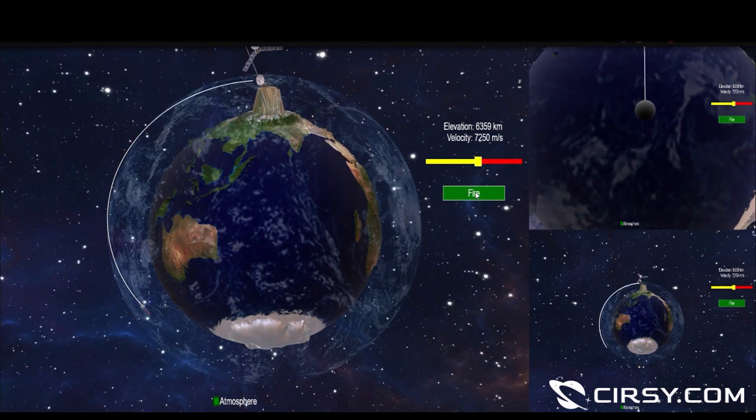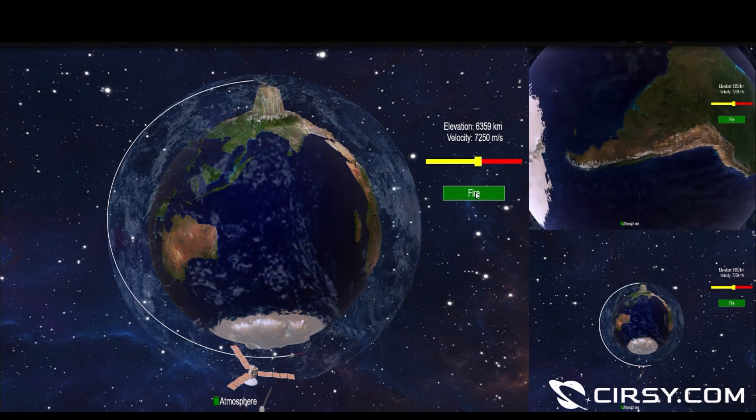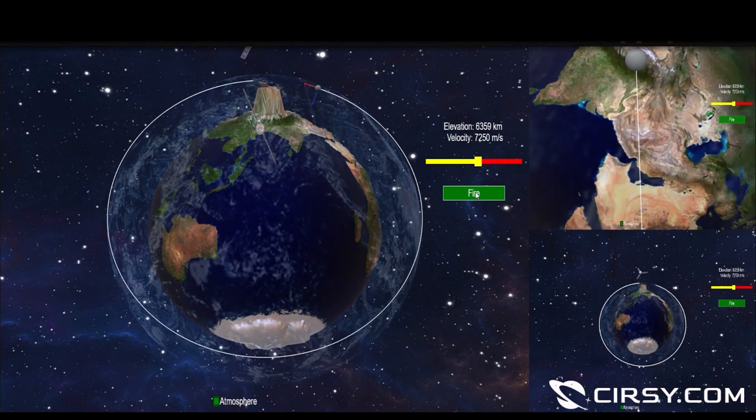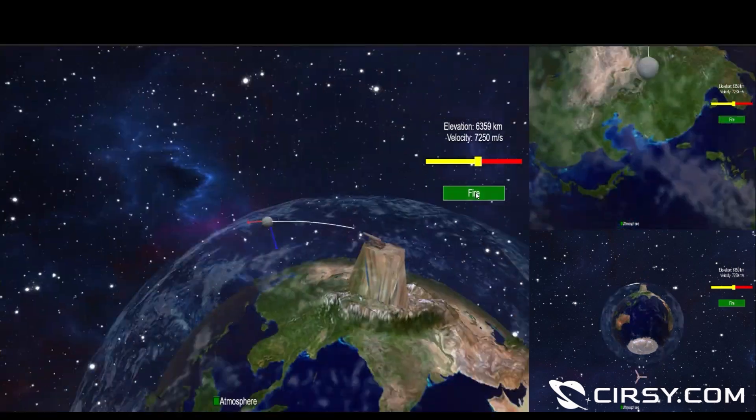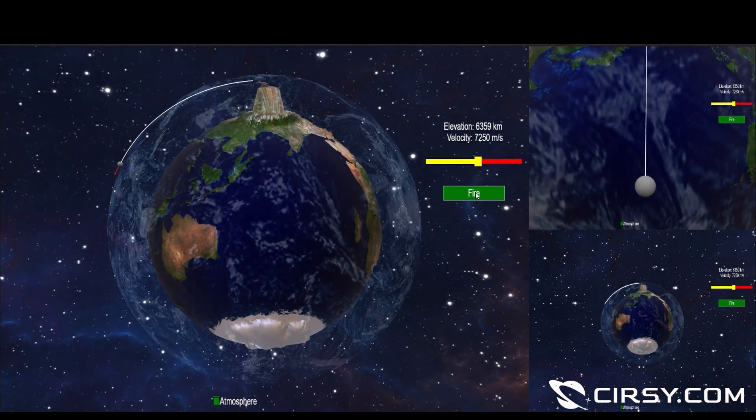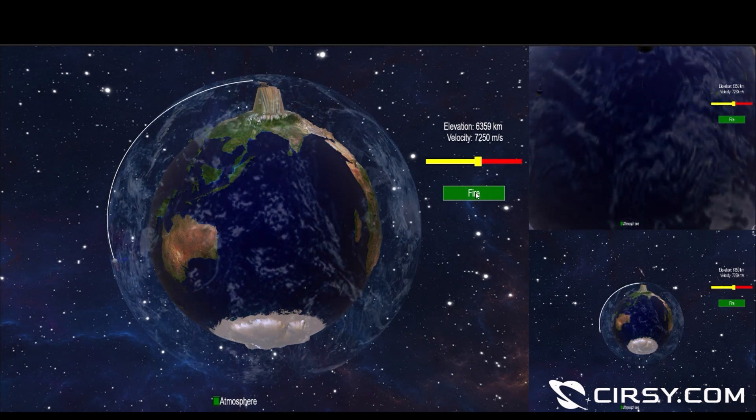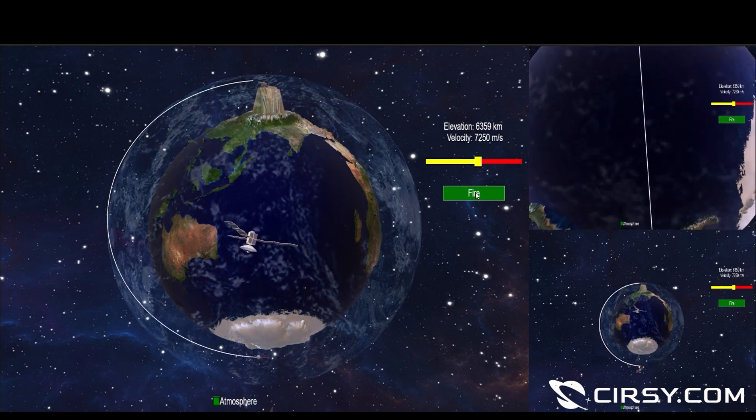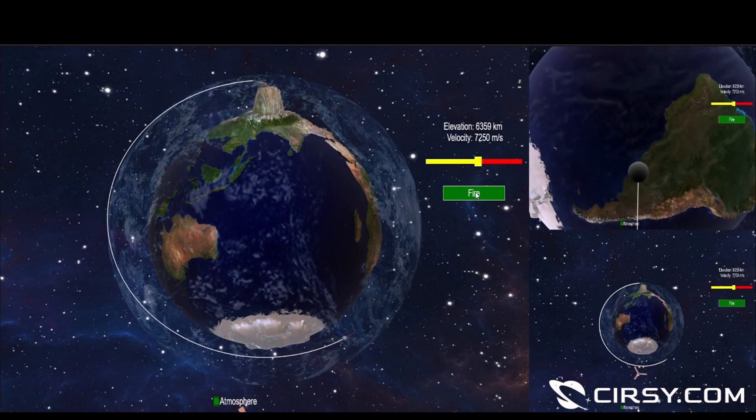If the initial horizontal velocity is high enough the cannonball's rate of descent will be same as the rate of fall of the curvature of the earth. So even though the cannonball is falling it is falling continuously and at a rate that ensures that it will not strike the earth's surface.